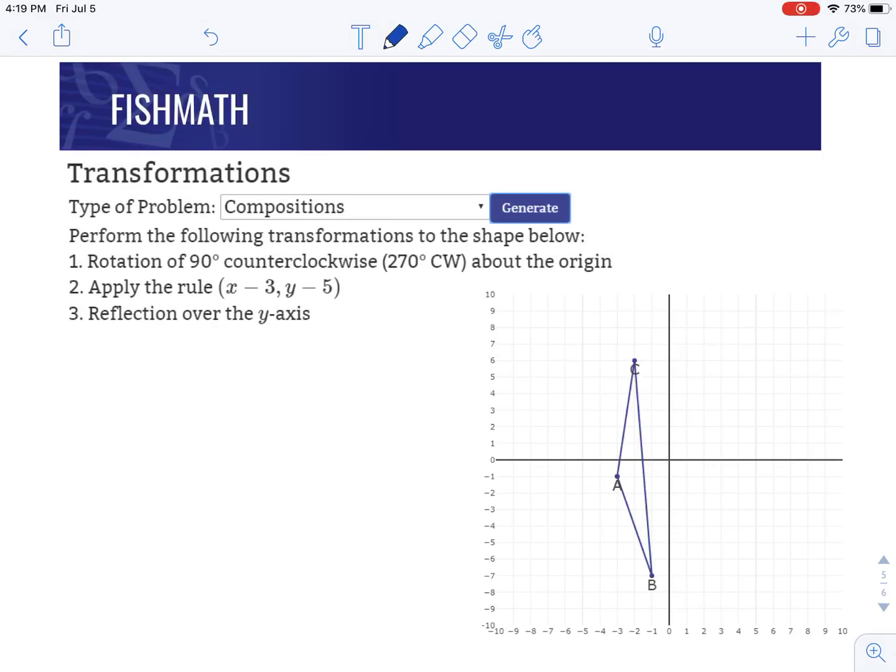Hi everyone. We're going to look at how to do a composition of transformations on the coordinate grid. So a composition basically is just a combination of more than one transformation.